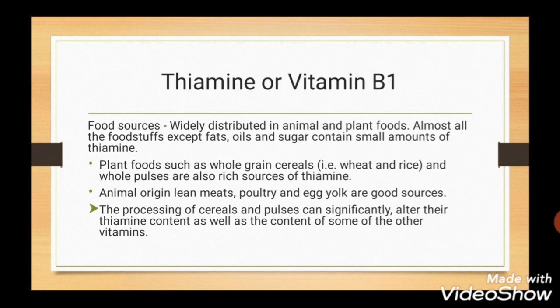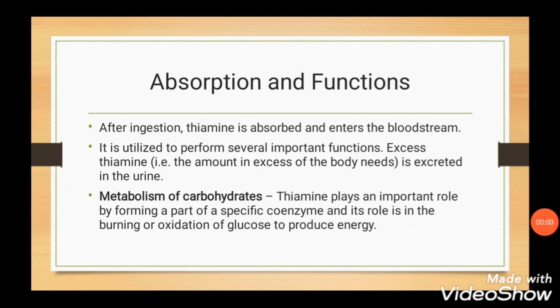Thiamine or Vitamin B1. Food sources include whole grain cereals, whole pulses, lean meats, poultry, and egg yolk. After ingestion, thiamine is absorbed and enters the bloodstream. Excess amounts of thiamine are excreted in the urine. Thiamine plays an important role by forming part of a specific coenzyme involved in the burning or oxidation of glucose to produce energy.